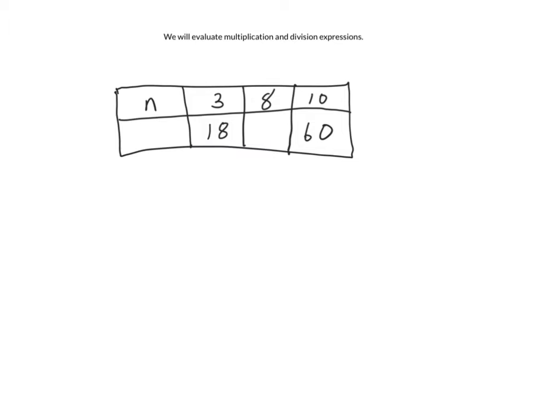So in the top row, we have n, and n is a variable. So 3, 8, and 10 are the numbers that represent n. And in the first column here, we have 3 and we have 18. In the third column, we have 10 and we have 60.